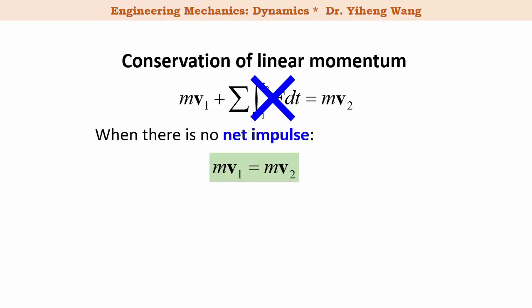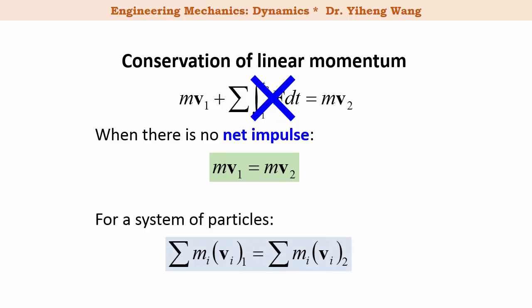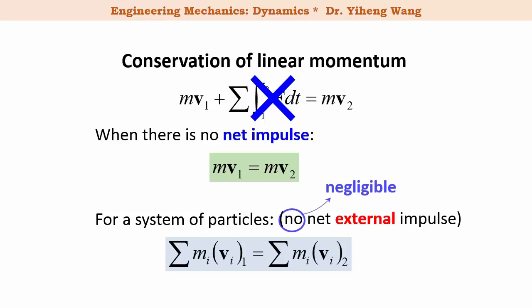The conservation of linear momentum can also be applied to a system of particles. In this case, the total linear momentum of all particles in the system at the initial state equals the total final linear momentum of all particles in the system. This applies when there is no net external impulse to the system, because any internal impulse will be cancelled out. But sometimes this condition can be relaxed, and we can still apply conservation of linear momentum if the external impulse can be considered negligible.